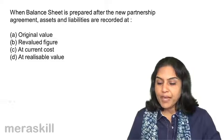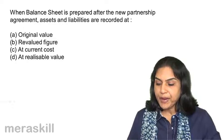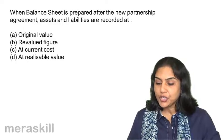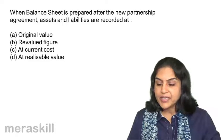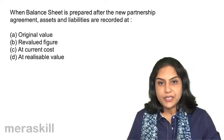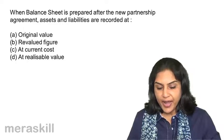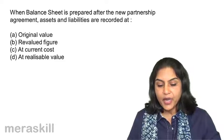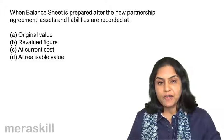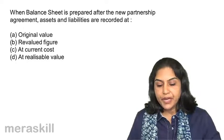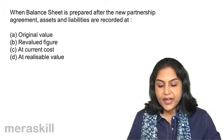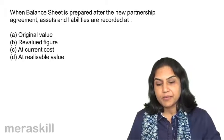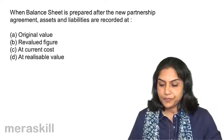When balance sheet is prepared after the new partnership agreement, assets and liabilities are recorded at: A. Original value. B. Revalued figure. C. At current cost. D. At realizable value.